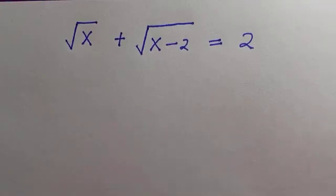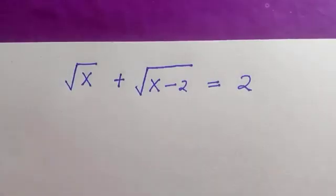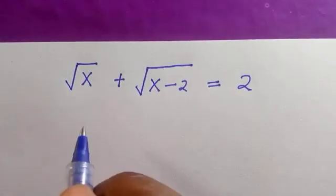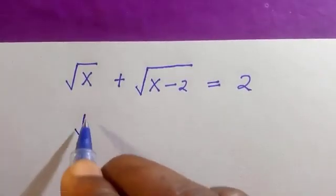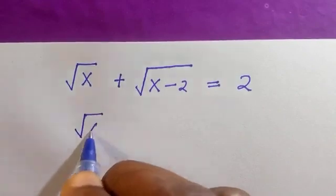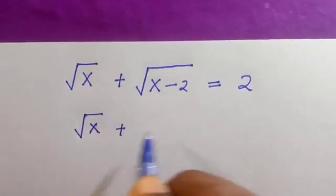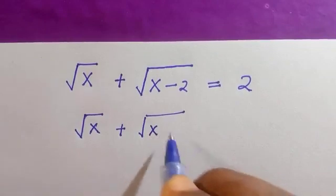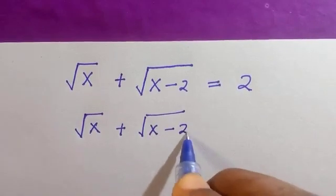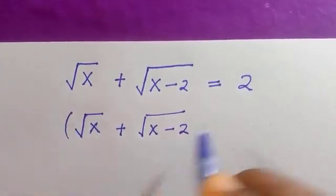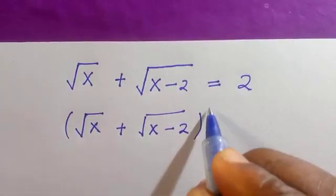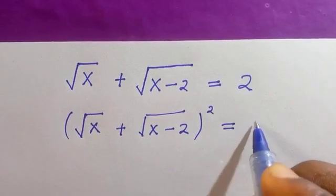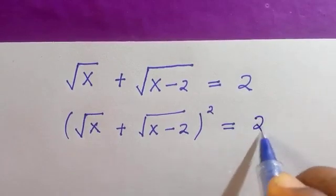Welcome to another video. Let's solve this problem: root x plus root x minus 2 equals 2. The next thing we're going to do is take the square of both sides, so we have root x plus root x minus 2, all squared, equals 2 raised to the power of 2.